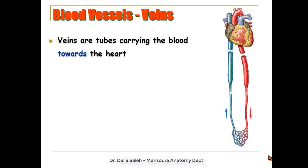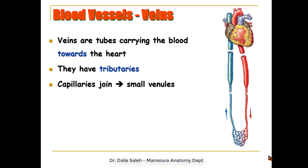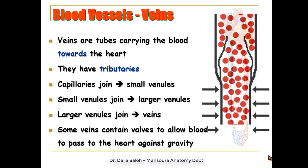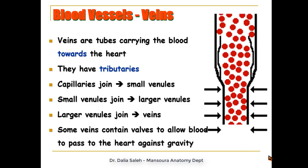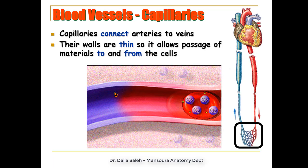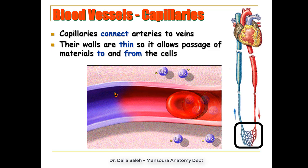Veins are tubes carrying blood towards the heart and have tributaries. They are formed by capillaries joining together to form small venules, which join other small venules to form larger venules, which then join to form the big veins. Some veins contain valves to allow blood to pass to the heart against gravity. Capillaries connect arteries and veins together, and their very thin walls allow the passage of materials like oxygen and carbon dioxide to and from the cells.